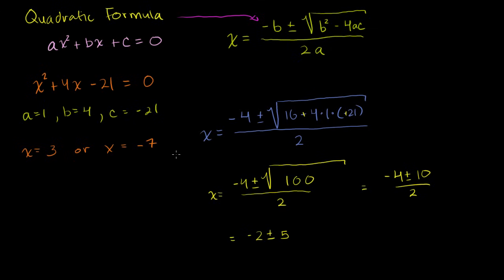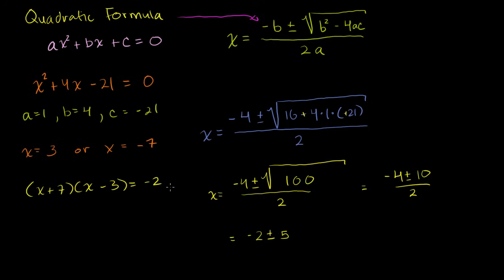The quadratic formula has given us an answer. You can verify by substituting back in, or you could factor: what two numbers have a product of −21 and a sum of +4? That gives (x + 7)(x − 3) = 0, so x + 7 = 0 or x − 3 = 0, meaning x = −7 or x = 3. So it definitely gives us the same answer as factoring.